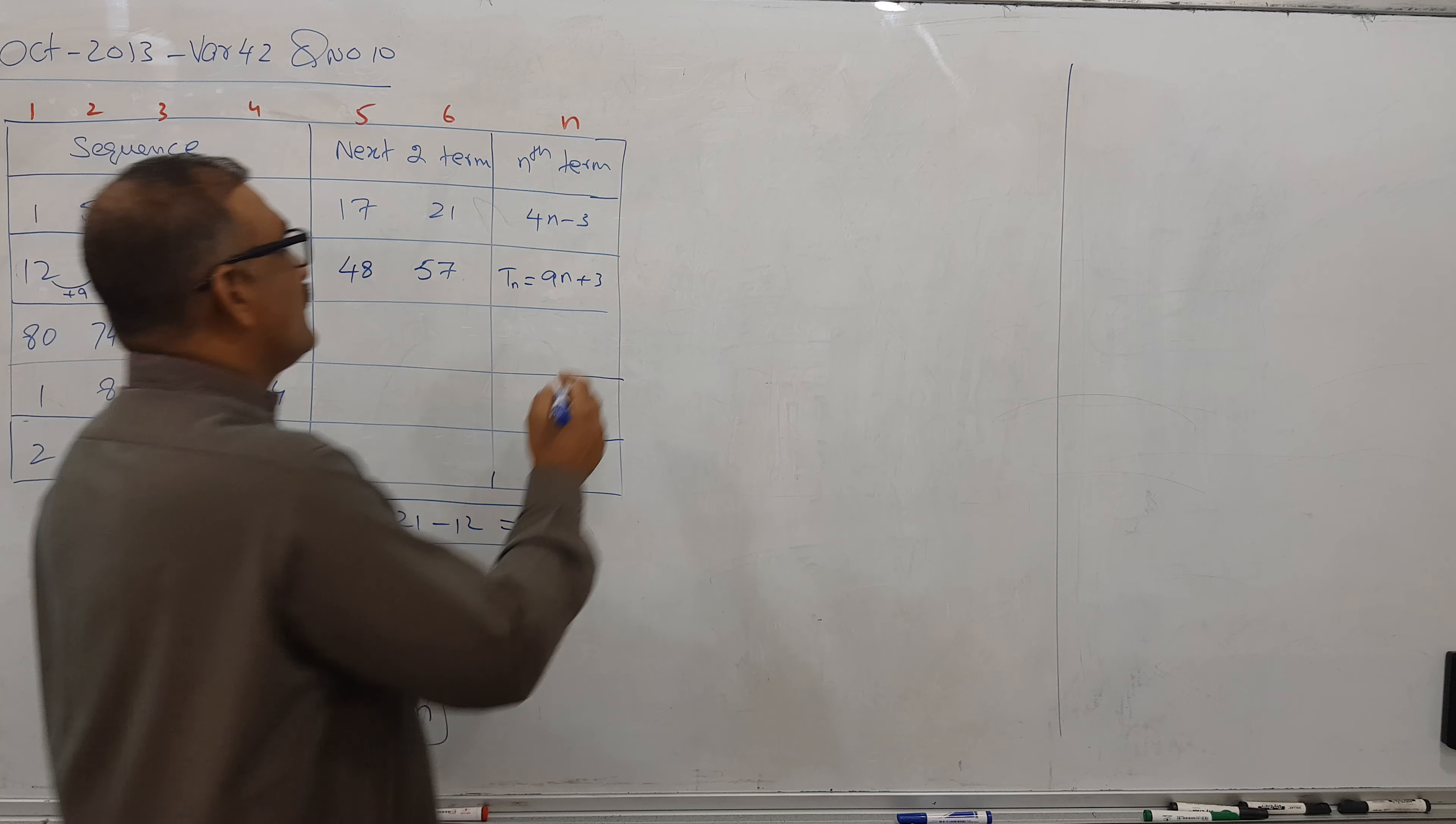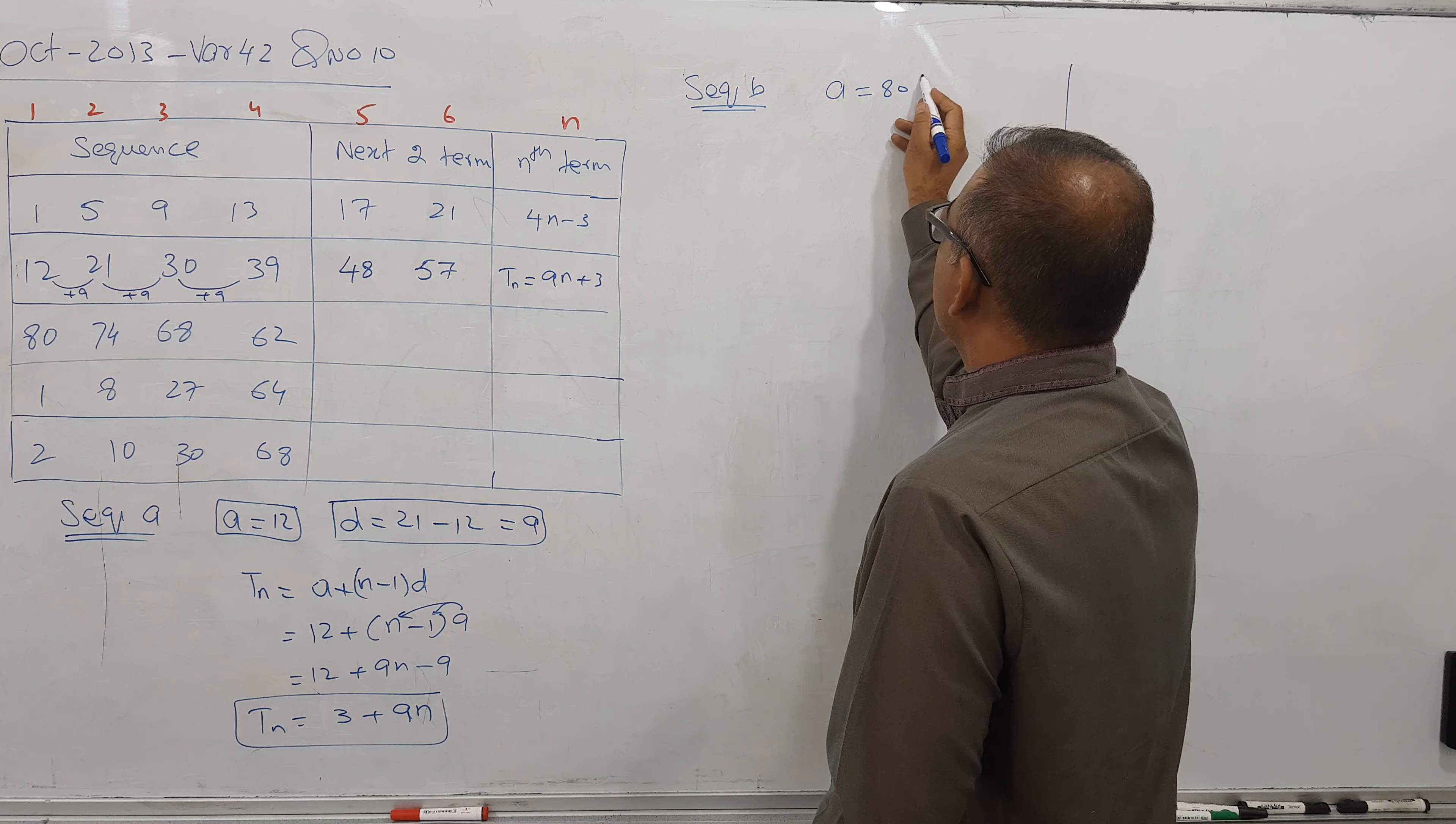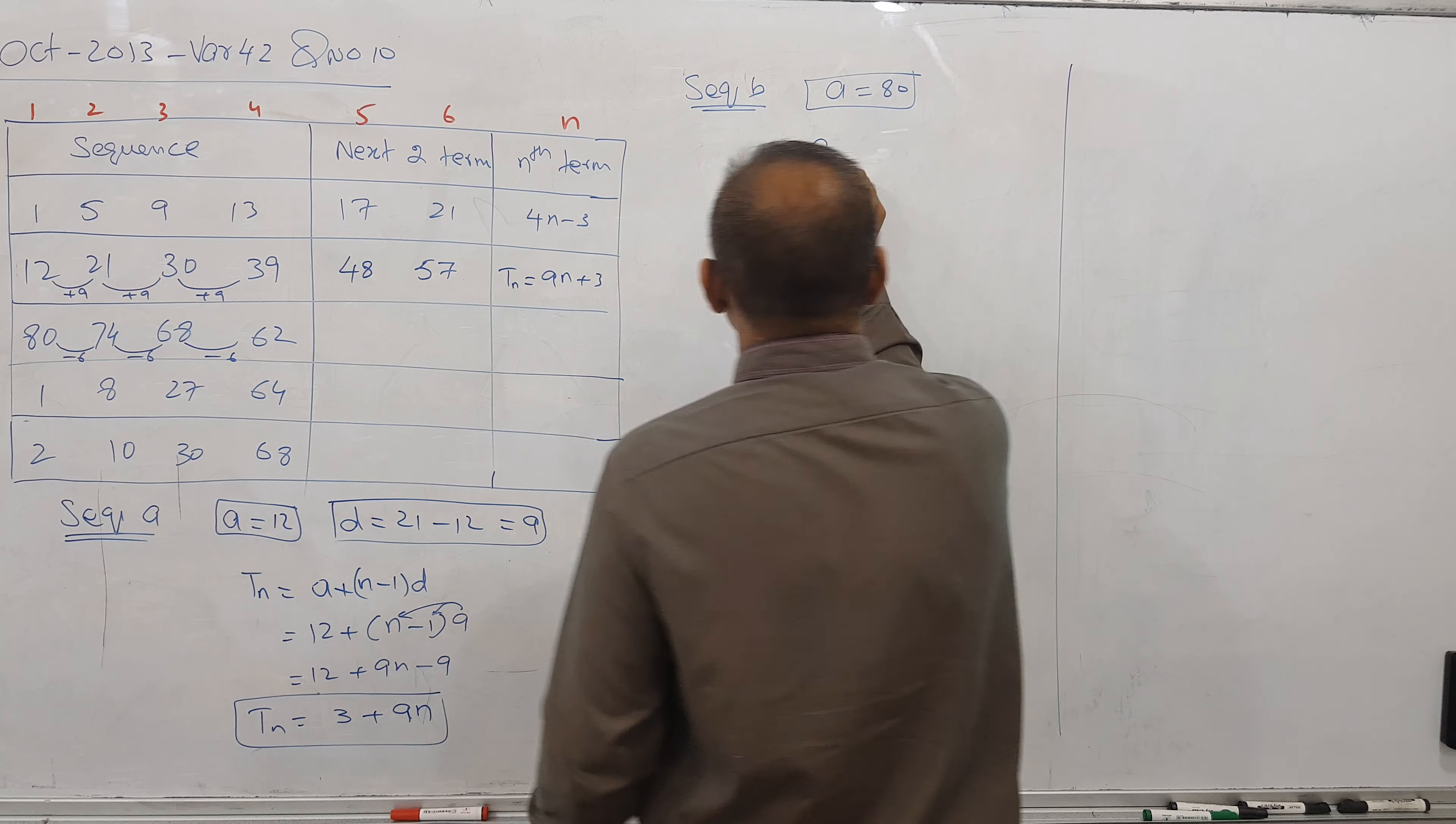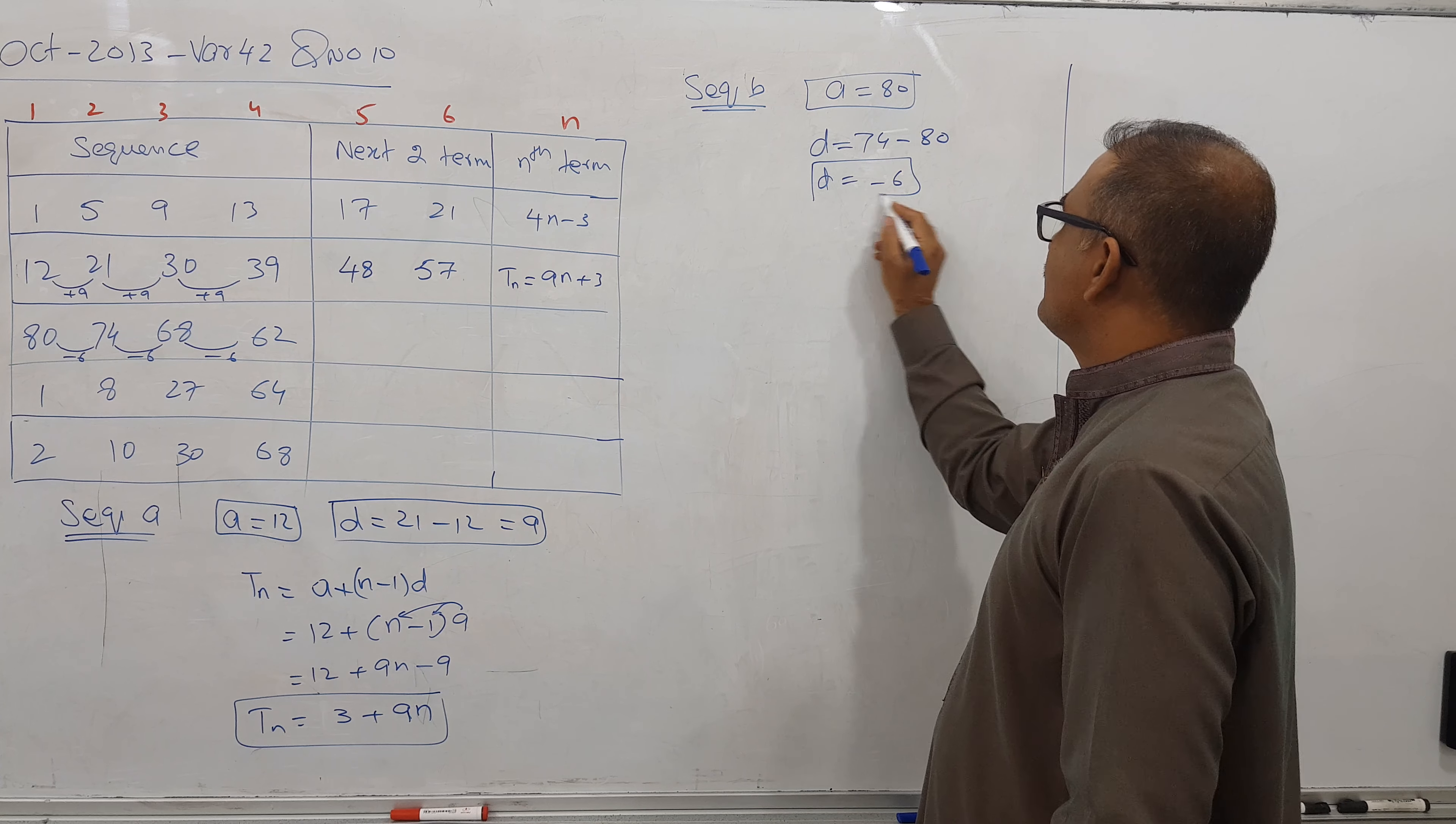Now similarly I will go for sequence B. For sequence B, as we have a look at here, first term is 80. And I can see here minus 6, I can see here minus 6. So common difference is coming here, second term minus the first term will give us minus 6. So I got a common difference minus 6.